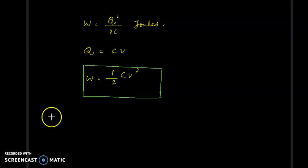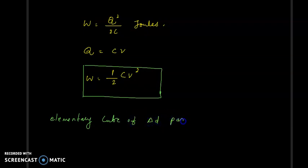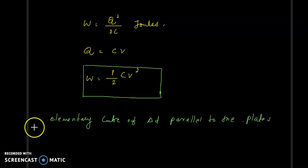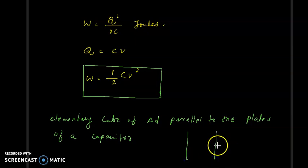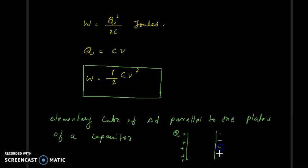Now consider an elementary cube of side delta D, placed parallel to the plates of the capacitor. These two plates have charges on either side, and there is an elementary cube in between the plates of this capacitor.